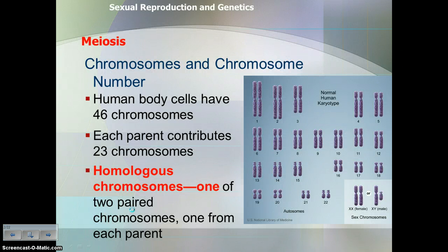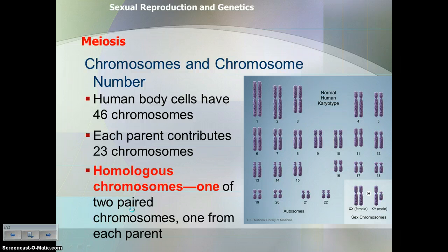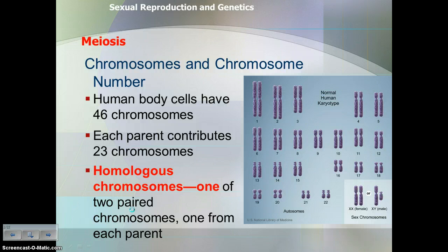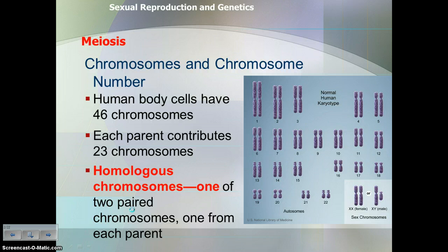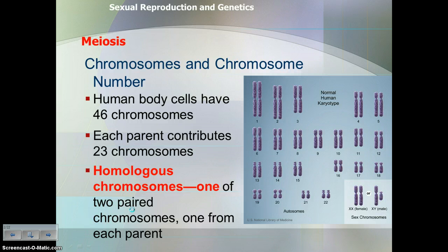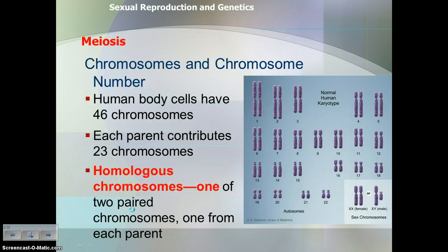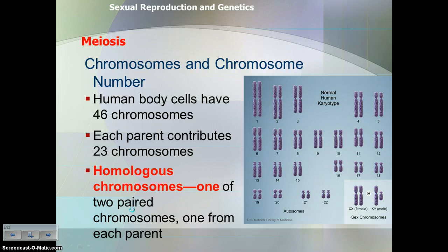Before we talk about the process, I want to do a quick review of chromosomes and how these relate to humans. You've probably heard before that human body cells or somatic cells have 46 chromosomes. There are two sets of 23 chromosomes, or 23 pairs — one set from your biological mother and one set from your biological father.